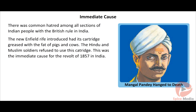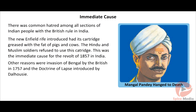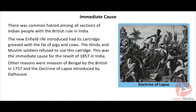Mangal Pande, an Indian soldier, killed a British officer for forcing him to use the rifle. He was later executed on 9th May 1857, which sparked the revolt. Other reasons included the British invasion of Bengal in 1757 and the Doctrine of Lapse introduced by Dalhousie. Indian cottage industries and handicrafts suffered a setback because of the British Industrial Revolution.